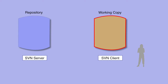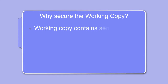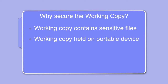If you need to secure your working copy, you will need to look into encrypting the file system on which it is hosted. The common reason for this is when the files in the working copy contain sensitive information, and the working copy is held on a portable device such as a laptop or USB drive.